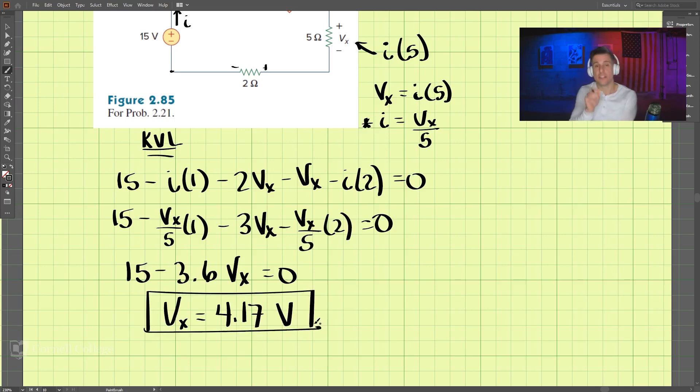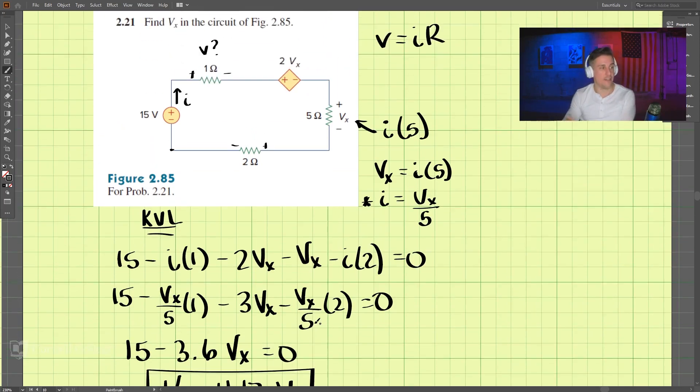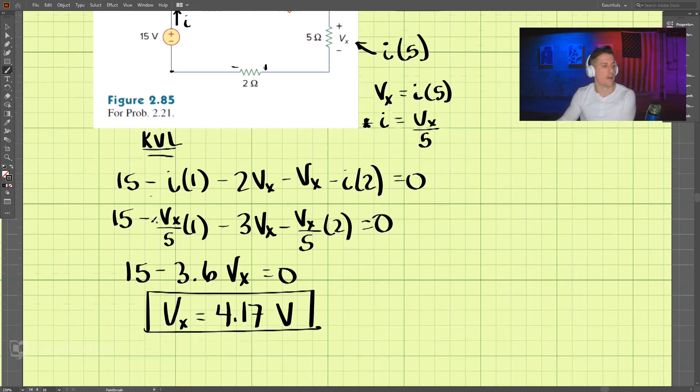So in this problem, we need to use KVL, Kirchhoff's voltage law, and we must use Ohm's law here. So we must use Ohm's law and Kirchhoff's voltage law to figure out Vx, which is 4.17.